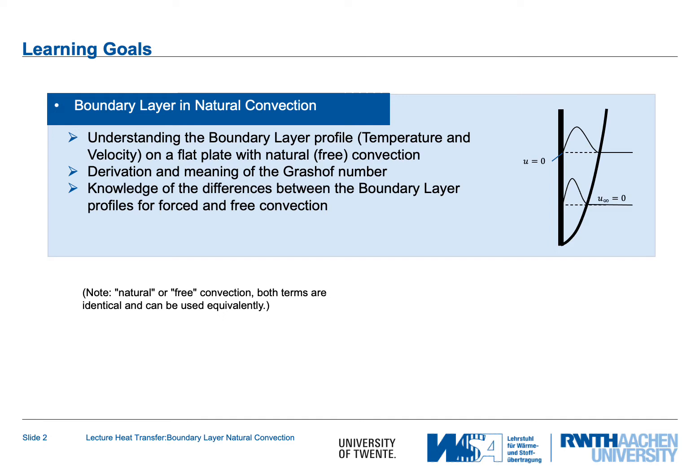To the right side you see this profile drawn for the case of a vertical flat plate. There is a dimensionless number that governs the behavior — the Grashof number — and we explain the derivation and the meaning of this number. Finally, we will cover the differences between the boundary layer profiles for forced and free convection. Note that both 'natural' and 'free' convection are terms used interchangeably in the literature and they both mean the same.